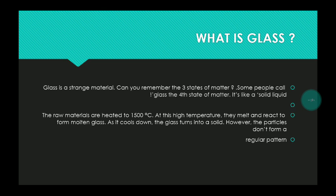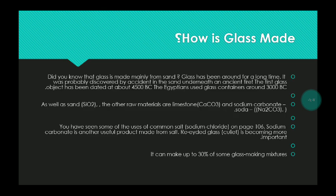The raw materials are heated to 1500 degrees Celsius. At this high temperature they melt and react to form a molten glass. As it cools down, the glass turns into a solid; however, the particles do not form a regular pattern.